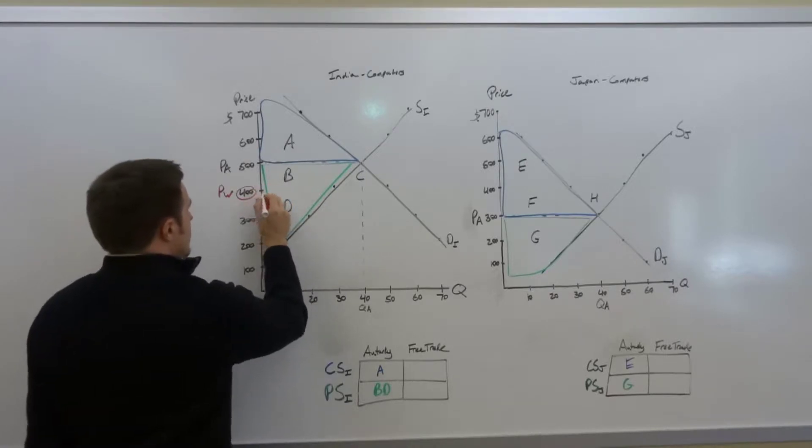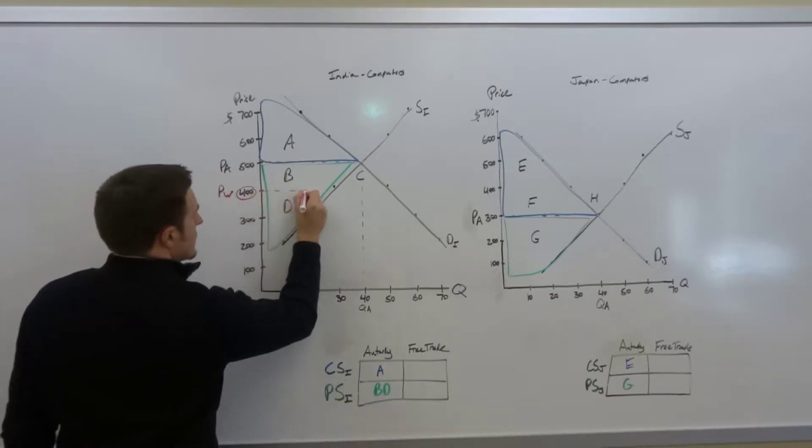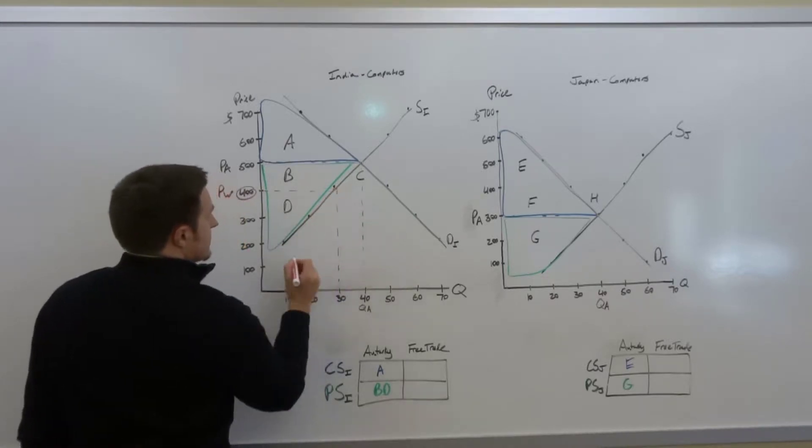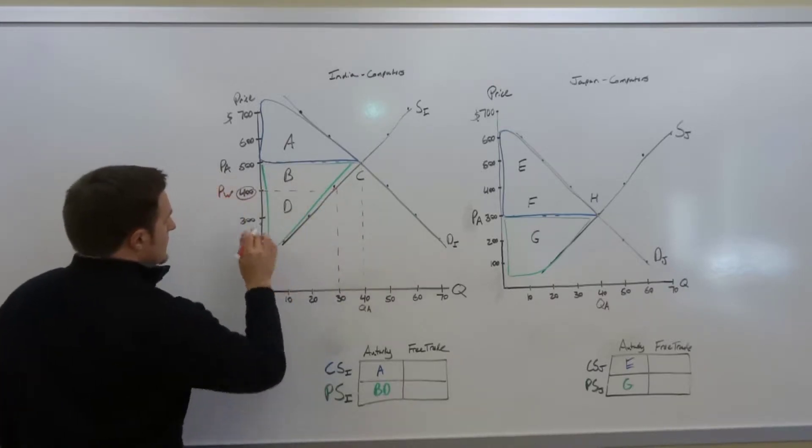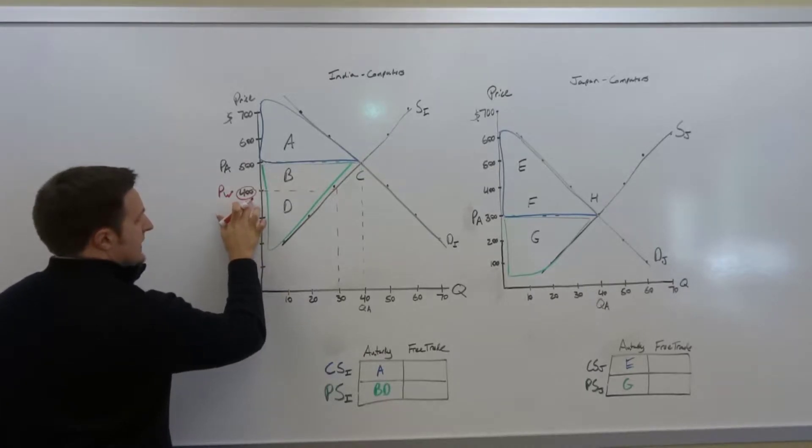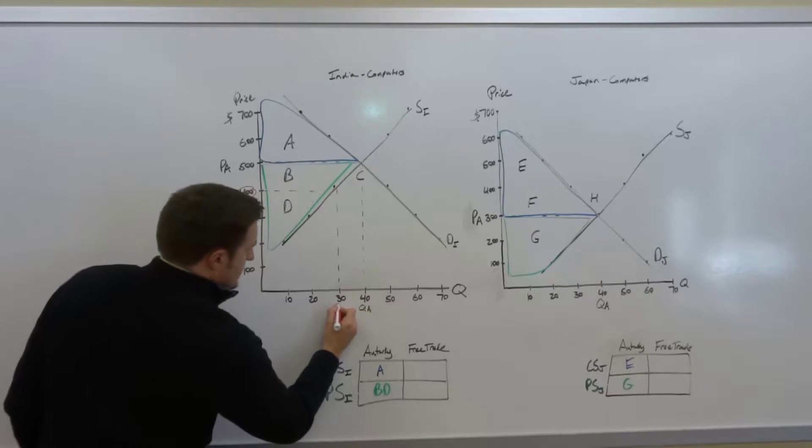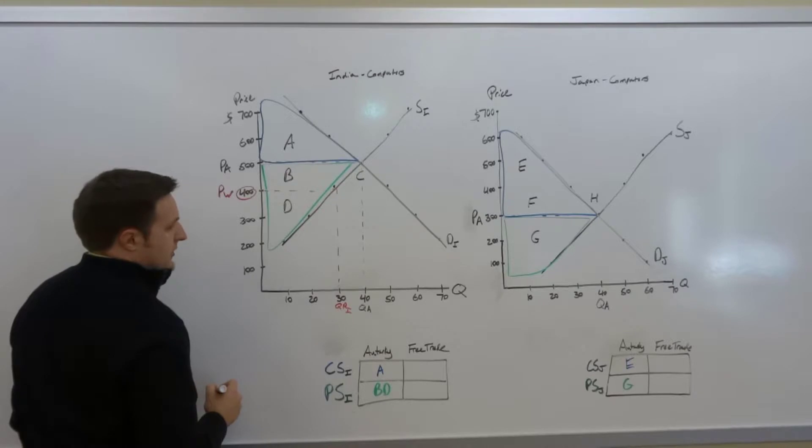Looking at the $400 price mark, go across to the supply curve. You can see that the domestic supply curve in India will hit the domestic supply curve at the price of $400 at the quantity of 30. So the quantity produced in India is only going to be 30.